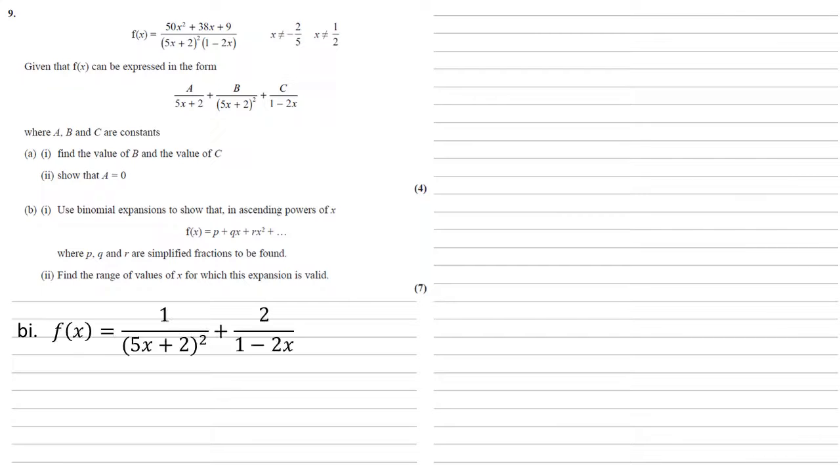So we know a, b and c, we've worked them out, so let's put them back in. f of x is equal to 1 over 5x plus 2 all squared plus 2 over 1 minus 2x.